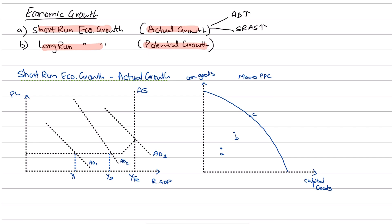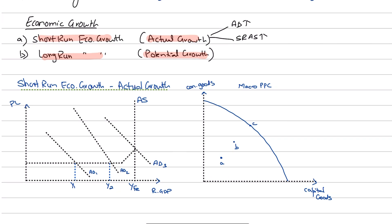Because the economy is in the recovery phase of the economic cycle, aggregate demand is going up, and that increase in real GDP is known as actual growth — also known as short-run economic growth — because the economic cycle constantly fluctuates. Due to these business cycles, the actual output differs from potential output, causing output gaps to occur. There could be positive output gaps or negative output gaps.